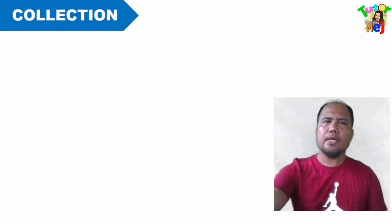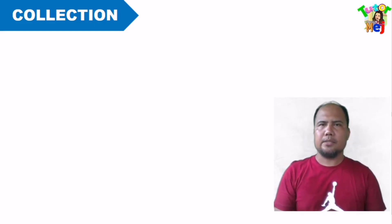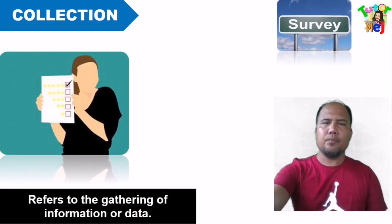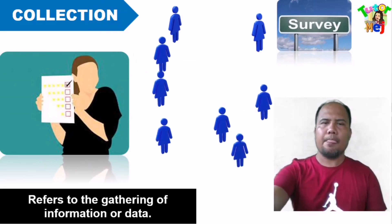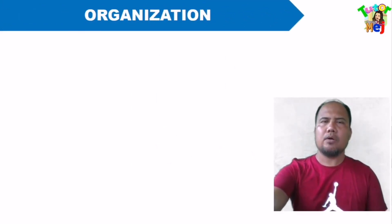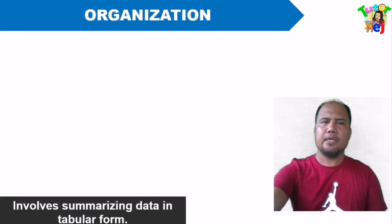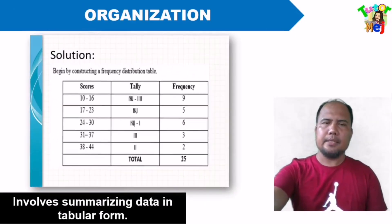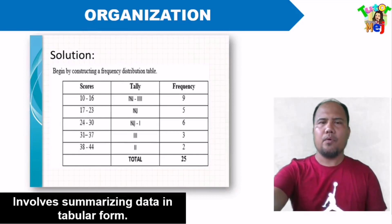Now, let us have the basic terms related to statistics. The first one is collection. Collection refers to the gathering of information or data. Next, organization. Organization involves summarizing data in tabular form.